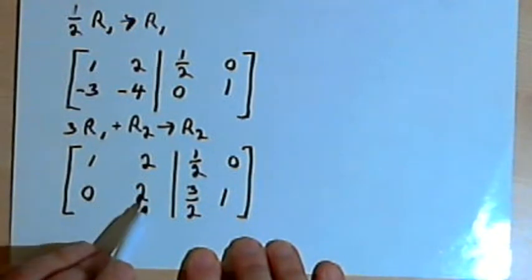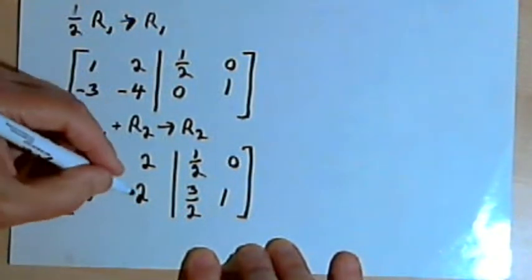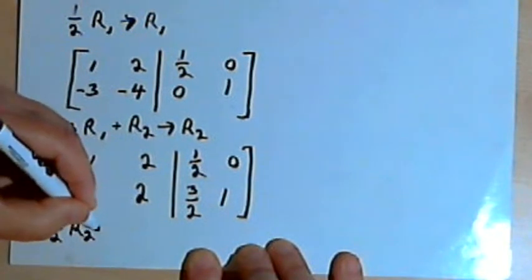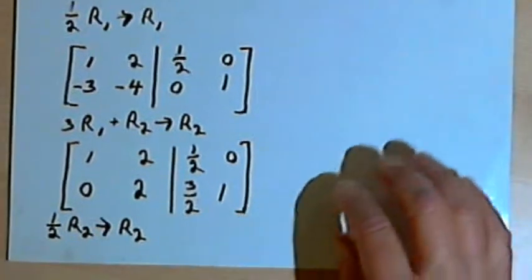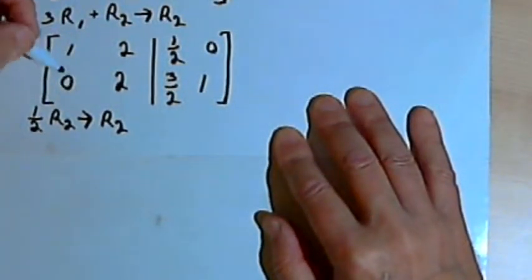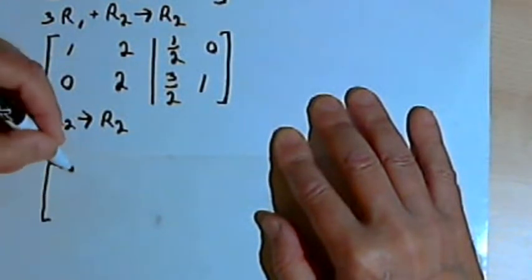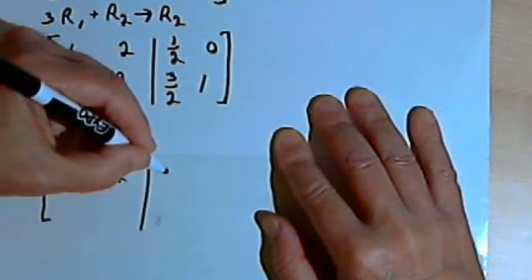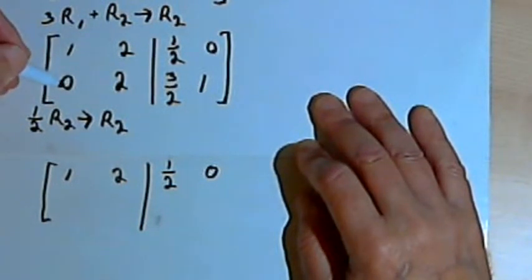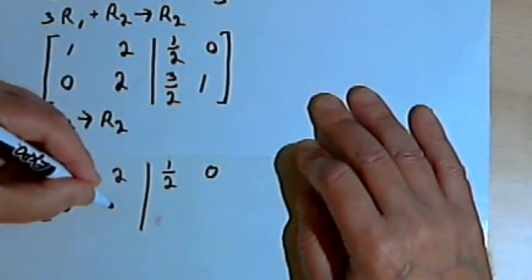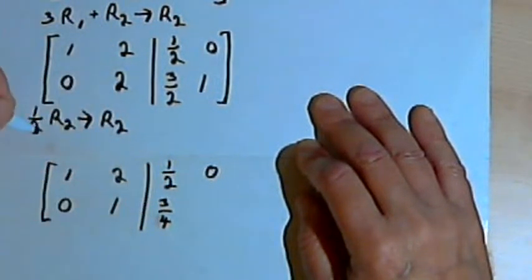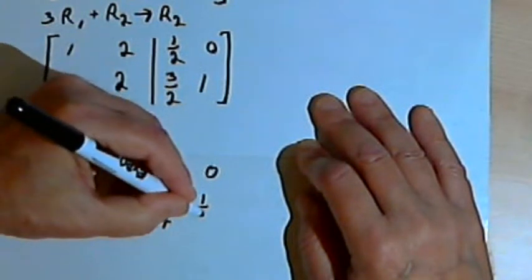I've got a 2 in the second row, second column, and I want to turn that into a 1. So I'll multiply by the reciprocal of 2 — once again multiplying by 1/2. So 1/2 times row 2 becomes the new row 2. The first row stays the same: 1, 2, 1/2, and 0. The second row gets multiplied by 1/2: 1/2 times 0 is 0, 1/2 times 2 is 1, 1/2 times 3/2 is 3/4, and 1/2 times 1 is 1/2.